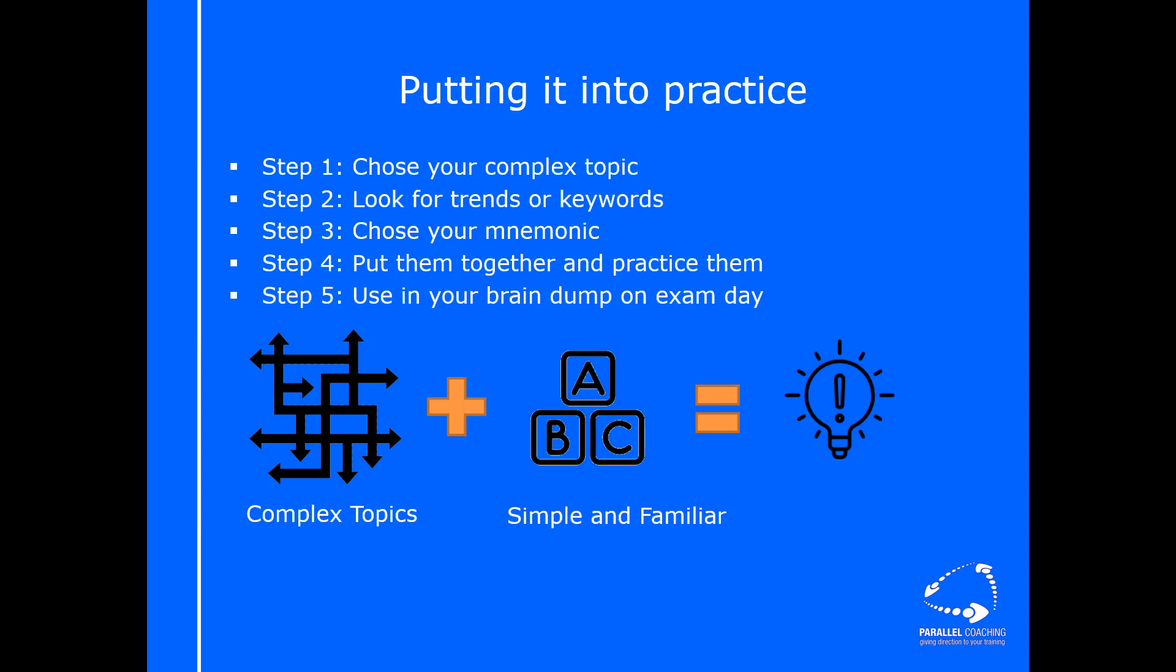Then you want to look for trends or keywords. This could be literally highlighting if it's a process, maybe the first letter of a few processes, or it could be that you relate it to something you already do know, like we were talking about analogies earlier.